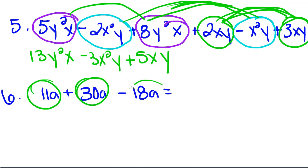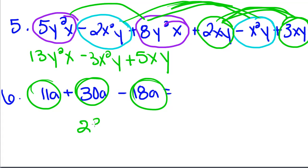This next one is a lot simpler — each one of these terms has an a in it, so we just add them together. 11 plus 30a gives you 41a, minus 18 gives us 23a. So that's all we're doing with combining like terms.